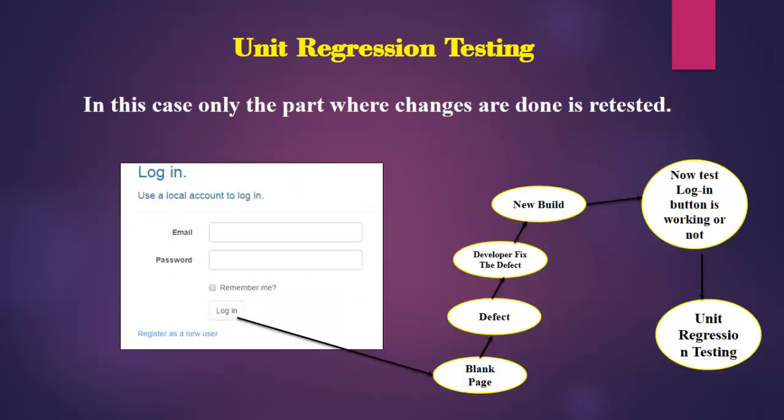In unit regression testing, only the part where changes are done is retested. For example, for a minor defect fix, only retesting the defect area would be sufficient. For example, the developer will give build one which consists of a login for the application.